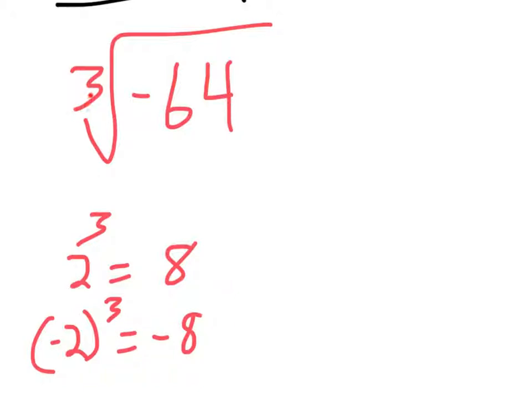The big thing to watch out for is if it's an even root here, you can't have a negative sign because you're always going to have a negative times a negative to make positive, so it'll cancel out. But if it's an odd number for a root, this can be computed.